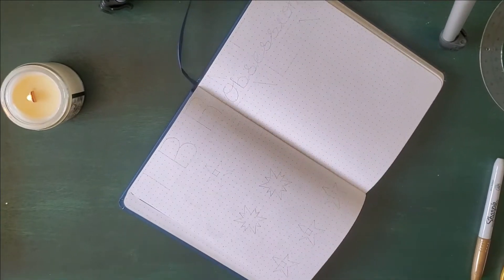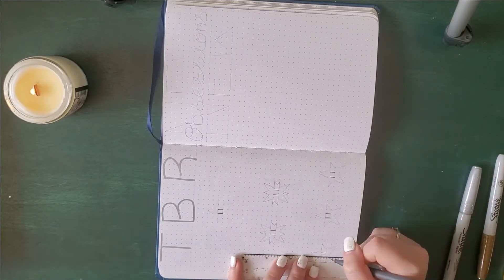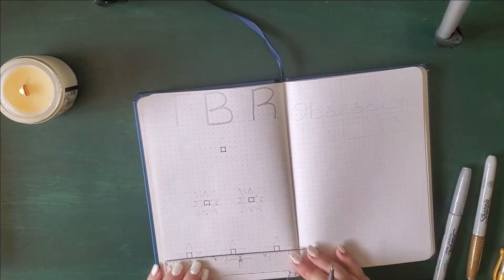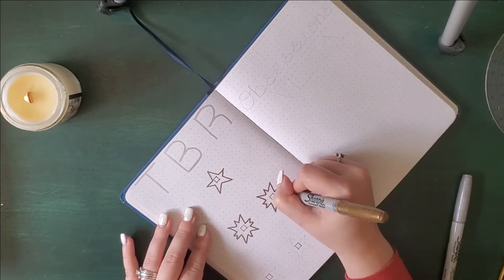Next up is my TBR and my new obsessions. For my TBR I decided to just do two different styles of stars and I will write the titles underneath. And for my new obsessions I decided to go with that same font type as the title page.